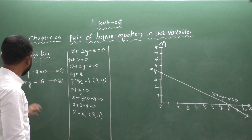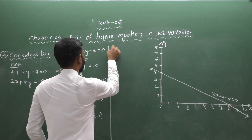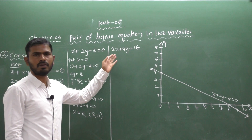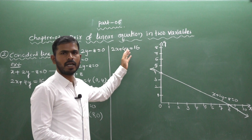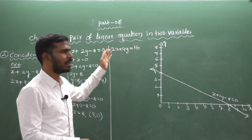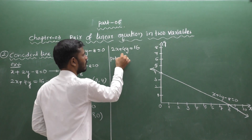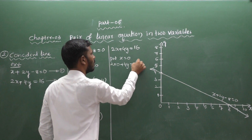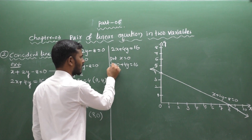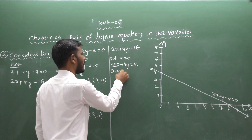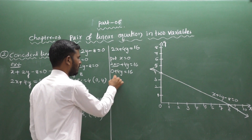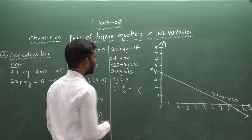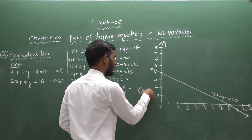Now let us solve the second equation: 2x plus 4y equal to 16. Similarly, substitute x equal to 0: 2 into 0 plus 4y equal to 16, so 4y equal to 16, giving y equal to 4. The first solution set is (0, 4).